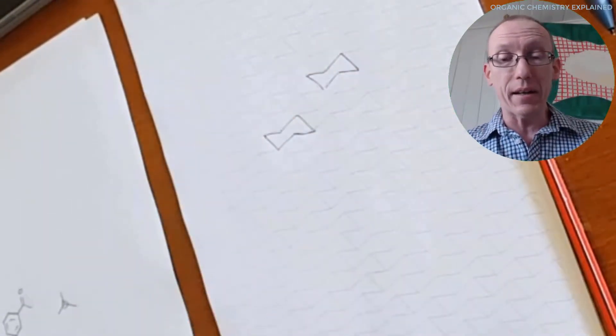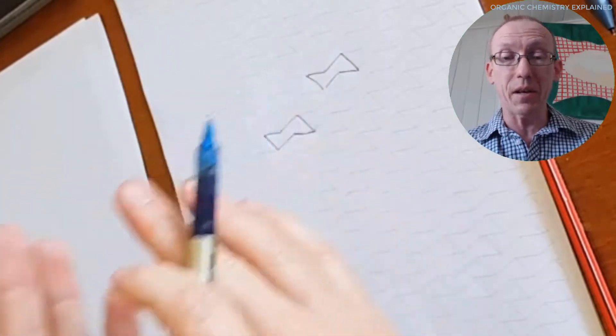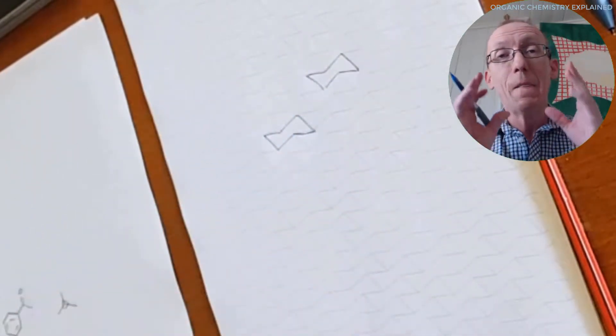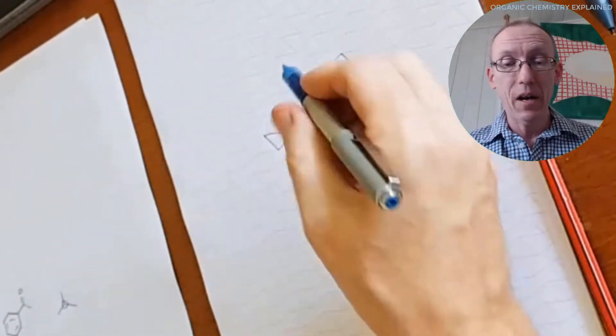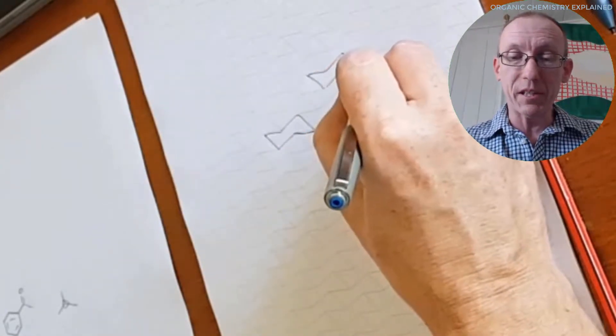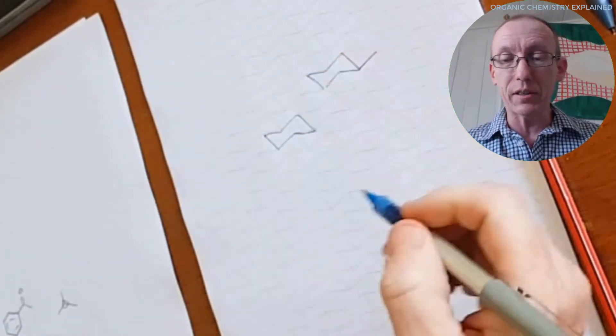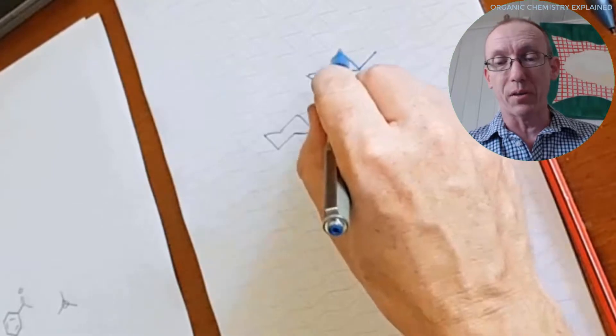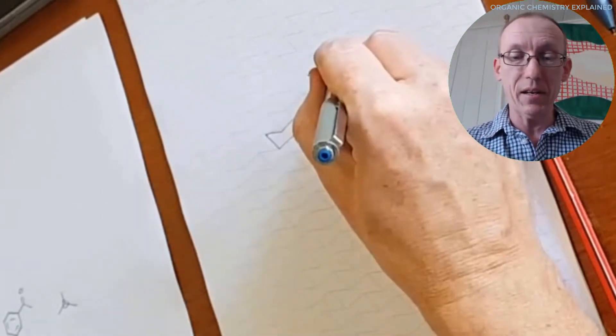And also, one thing I'd like to point out is that the chair cyclohexane template is not just good for the chair cyclohexane itself, but also for putting in your substituents. So your equatorial substituents always follow one of these bonds that are part of the template.